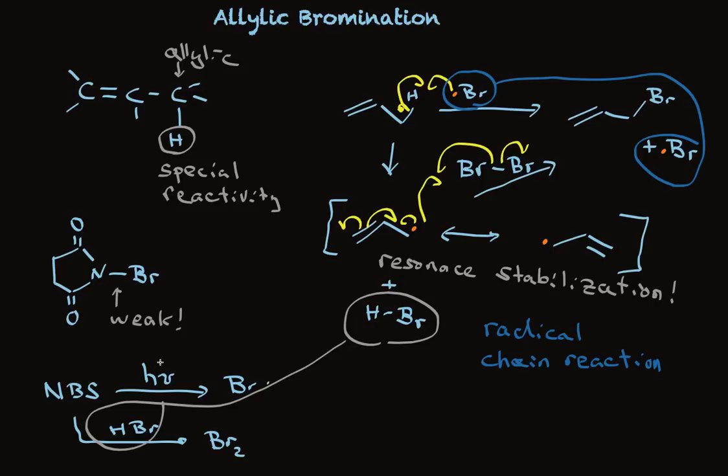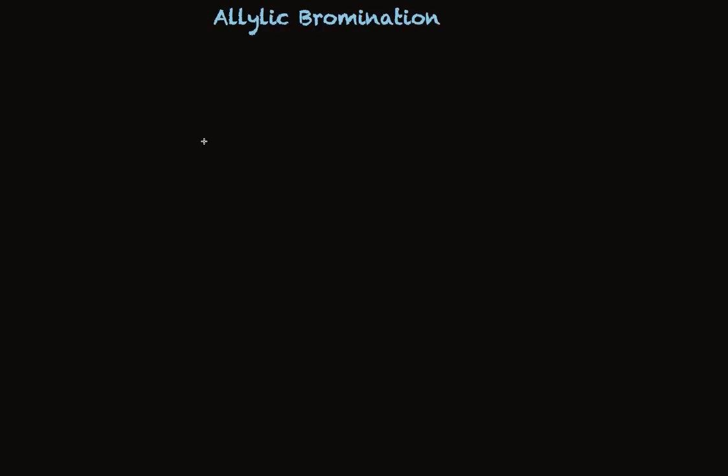Now let me show you just a little bit about using this reaction in the synthesis. Generally for good synthetic yields, we need to have an alkene that will generate a radical that has two identical resonant structures. Two identical resonant structures. Take a look.